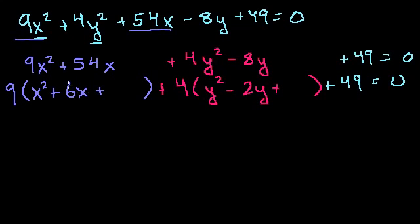So when we complete the square, we just take half of this coefficient. This coefficient is 6. We take half of it. It's 3. We square it. We get a 9.